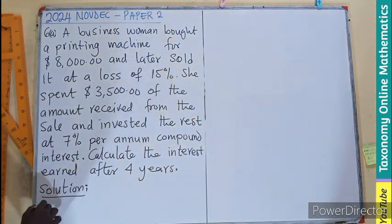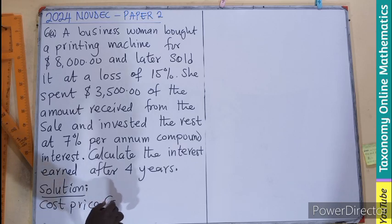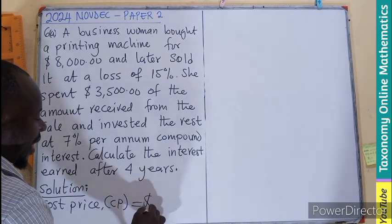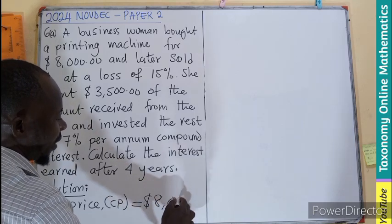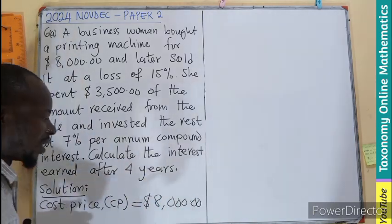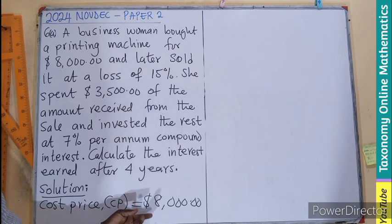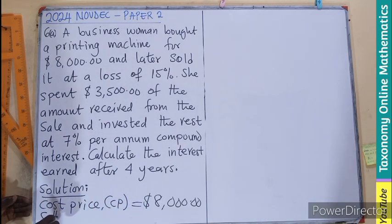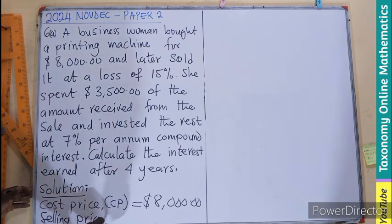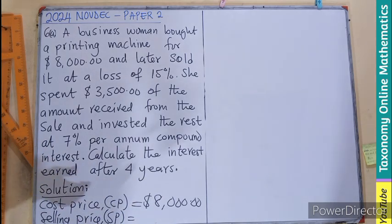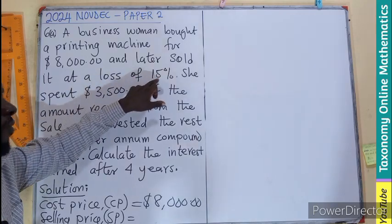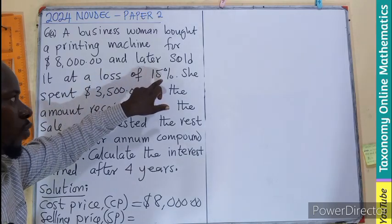First thing first, we know that the cost price, which we have as CP, is the actual cost of the machine — $8,000. Now we need to also know the selling price. The selling price involves a loss of 15%, so we need to find it.